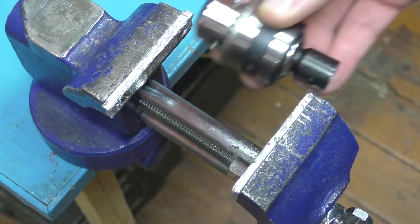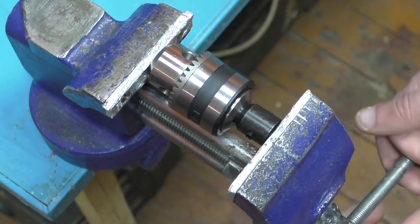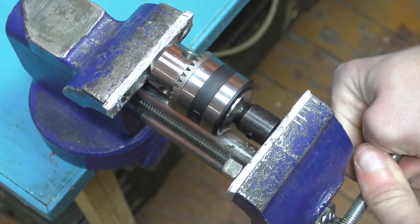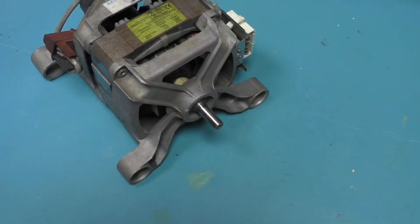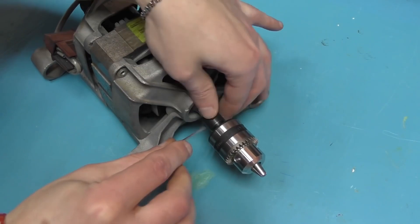Next, we'll use a vise to press it into the chuck. Now, attach the chuck to the motor, securing it with set screws.